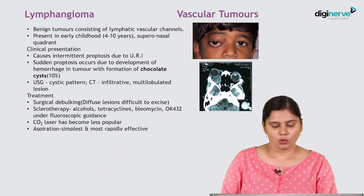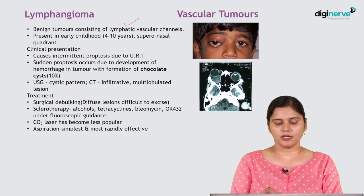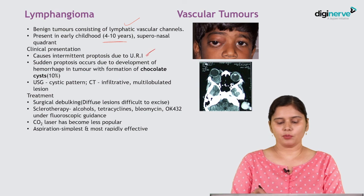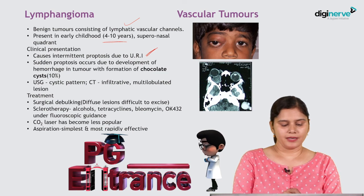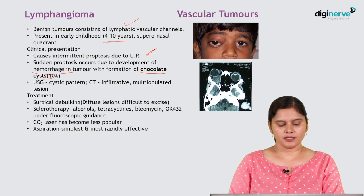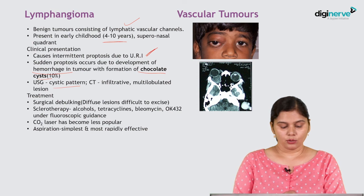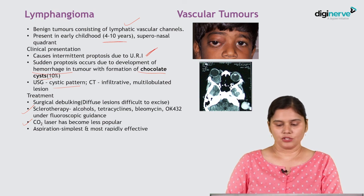Lymphangiomas, also called chocolate cysts, are benign tumors of lymphatic vascular channels. They present usually in early childhood as tumors causing intermittent proptosis related to upper respiratory infections. The intermittent proptosis occurs due to hemorrhage developing within the tumor, leading to formation of chocolate cysts. There is a cystic pattern on ultrasound. Surgically, the lesions need to be debulked; diffuse lesions are difficult to excise. Sclerotherapy or laser can also be used to reduce the size.